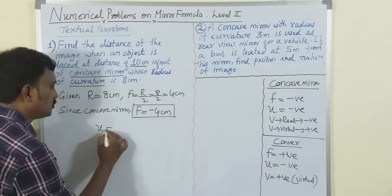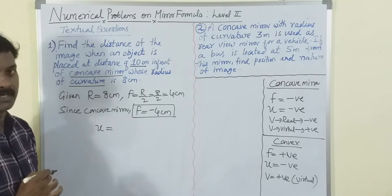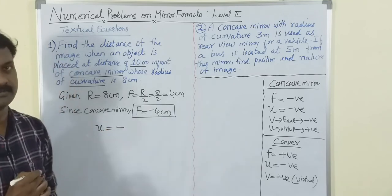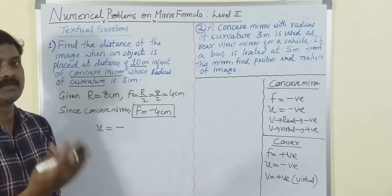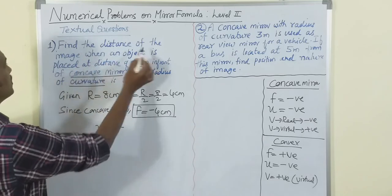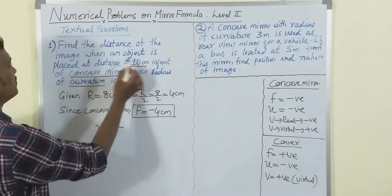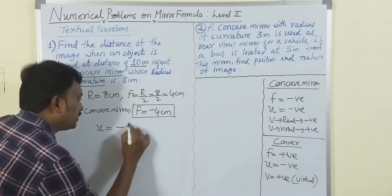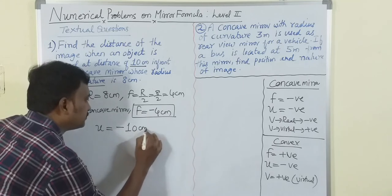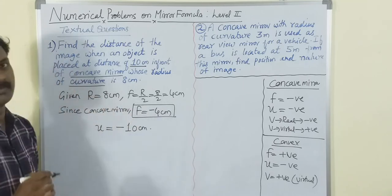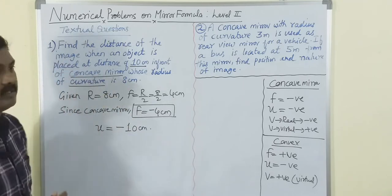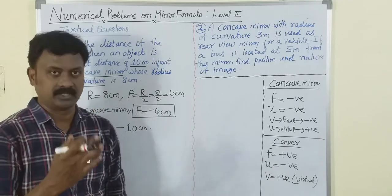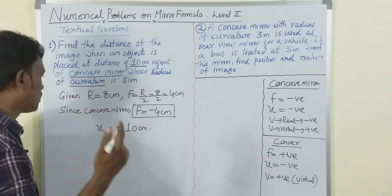Object distance u is always negative. The object is placed at 10 centimeters, so u = -10 cm. They have asked for the image distance v. Applying the mirror formula: 1/f = 1/u + 1/v.